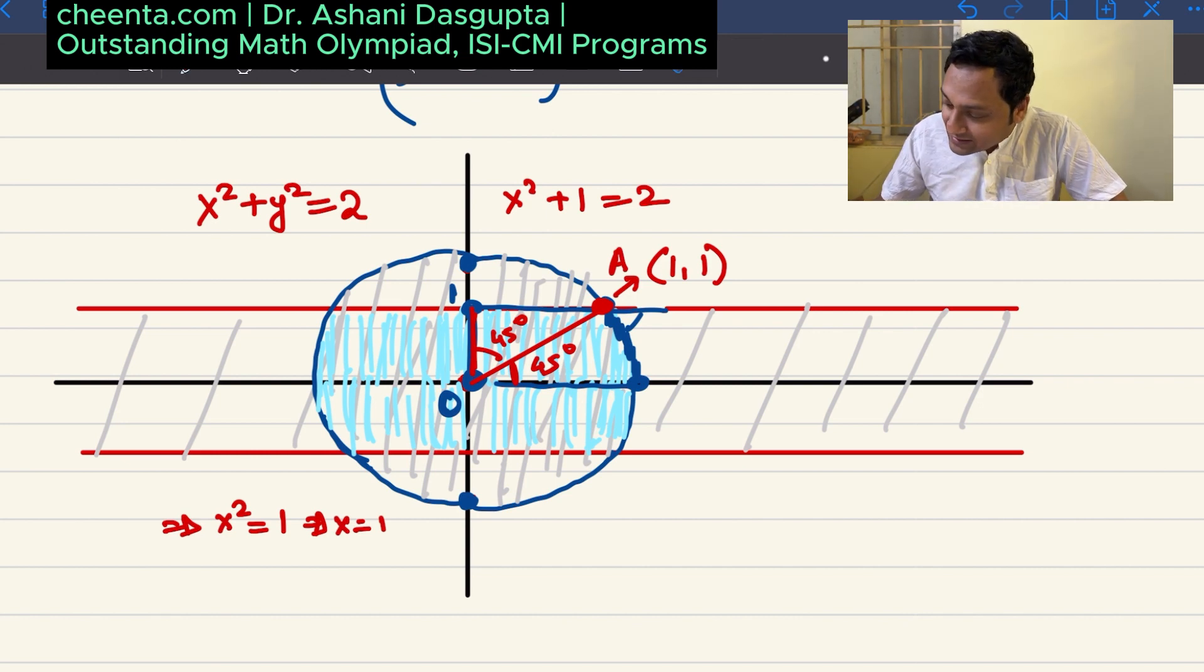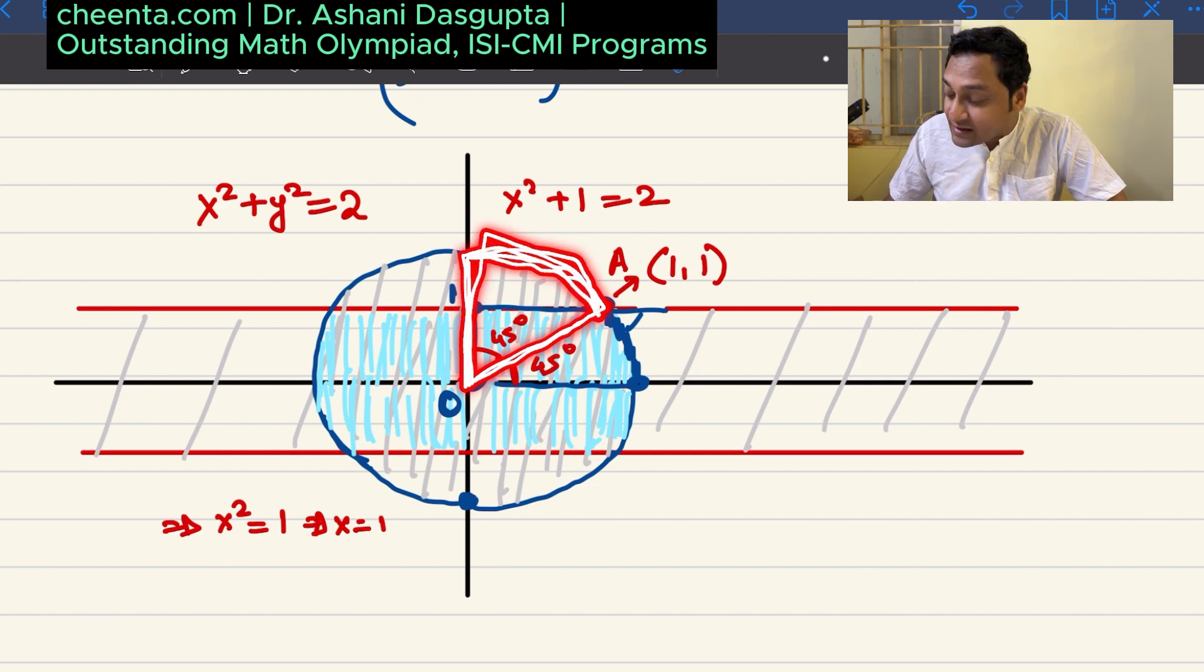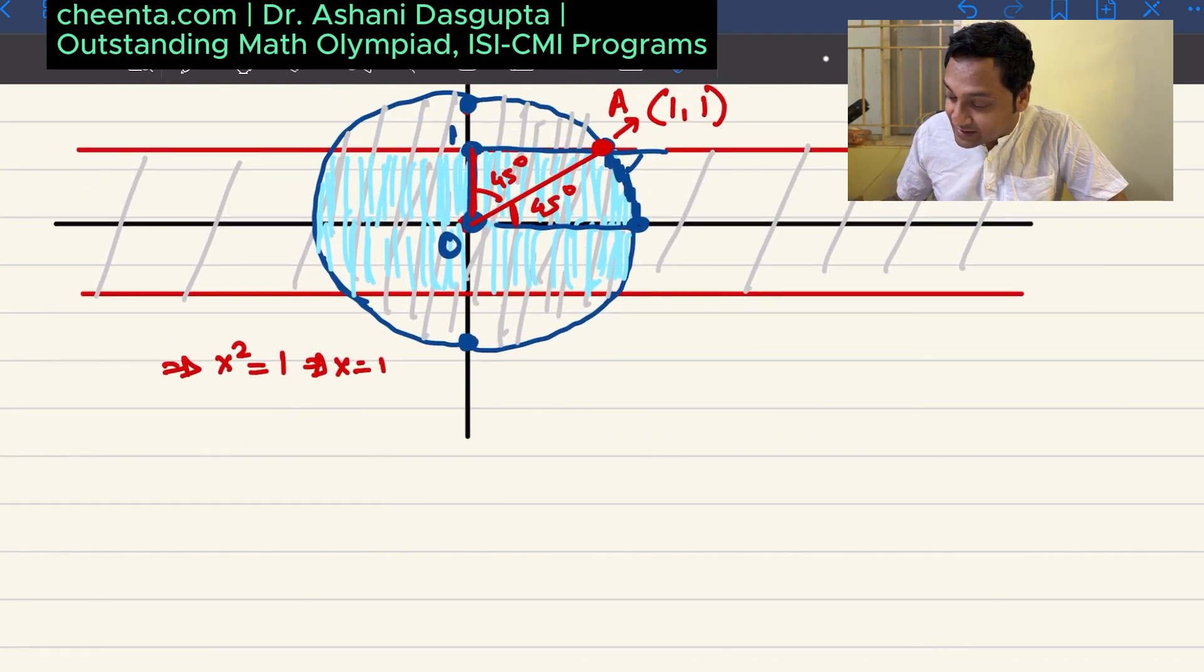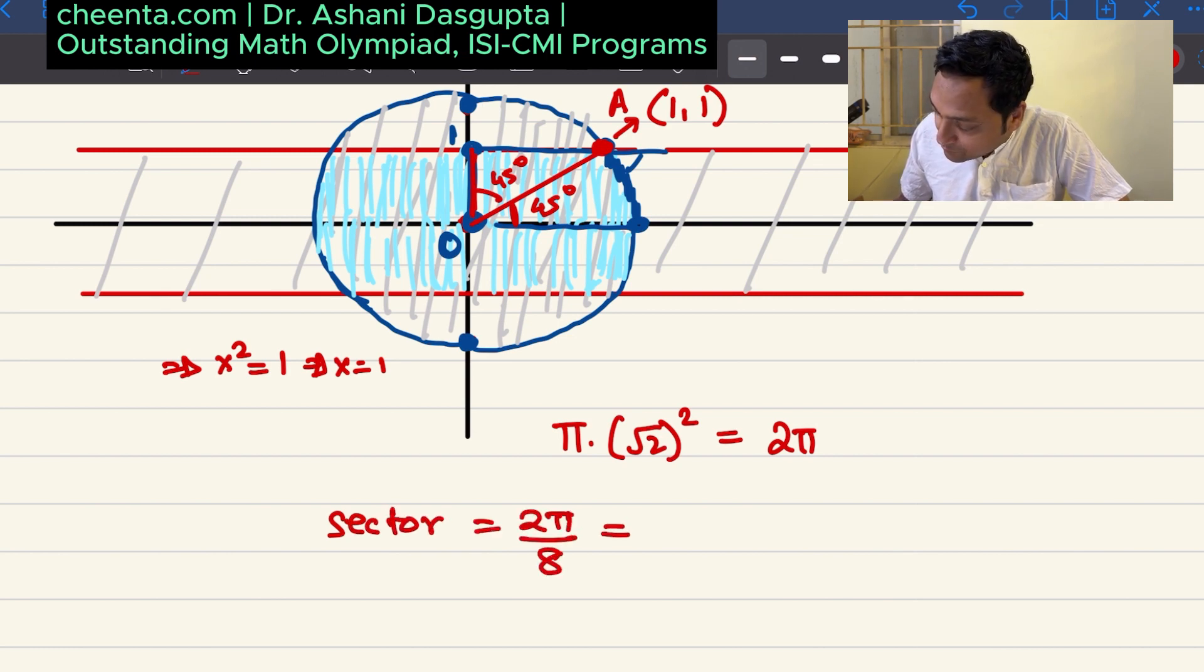So that means this sector here, this sector is 1/8th of the entire circle. What is the area of the entire circle? The area of the entire circle is pi times root 2 whole square or 2 pi. This is the area of the entire circle. So what is the area of the sector? The sector's area is 2 pi by 8 or pi by 4.